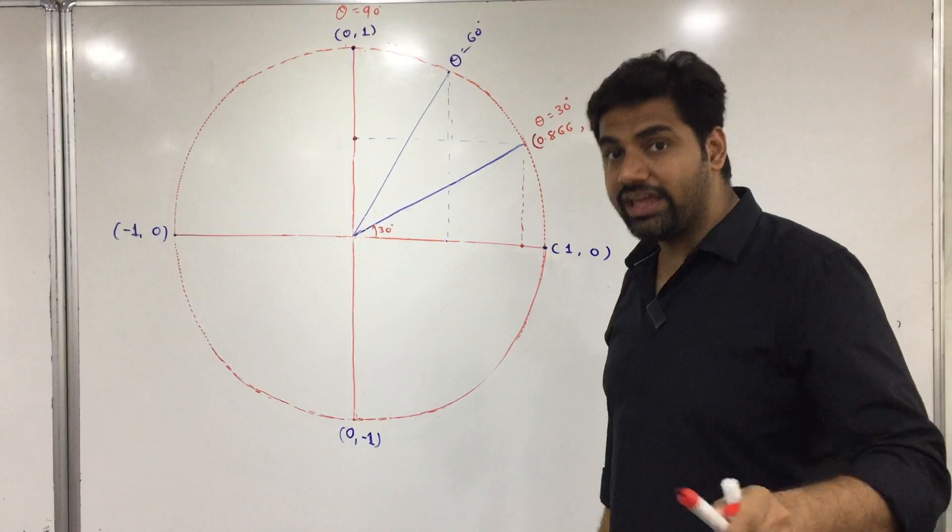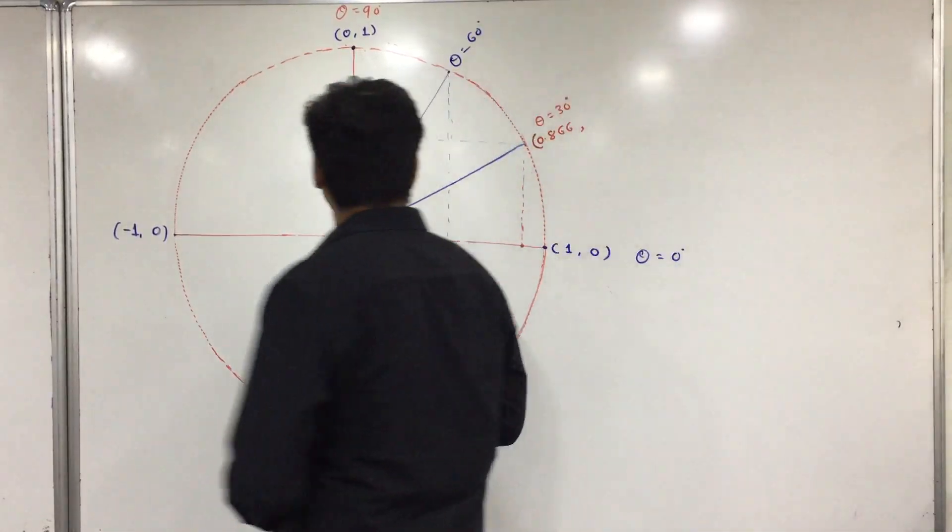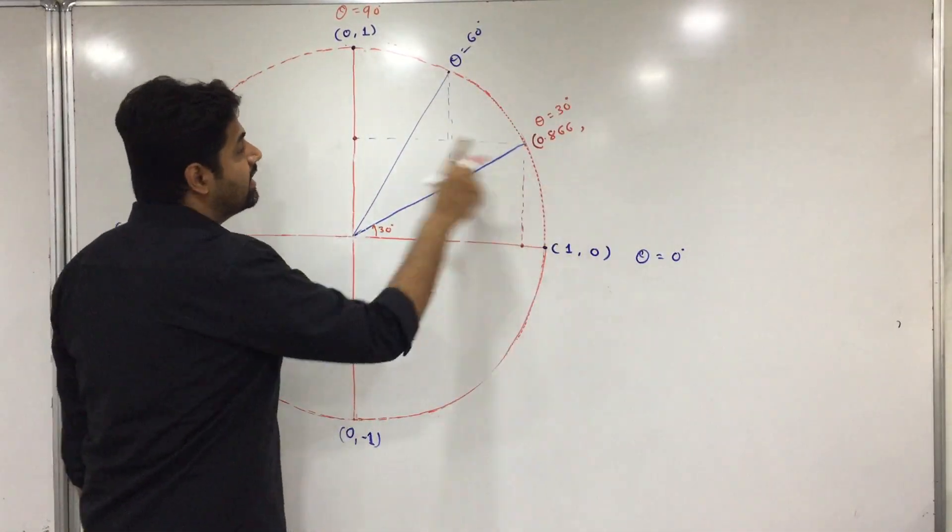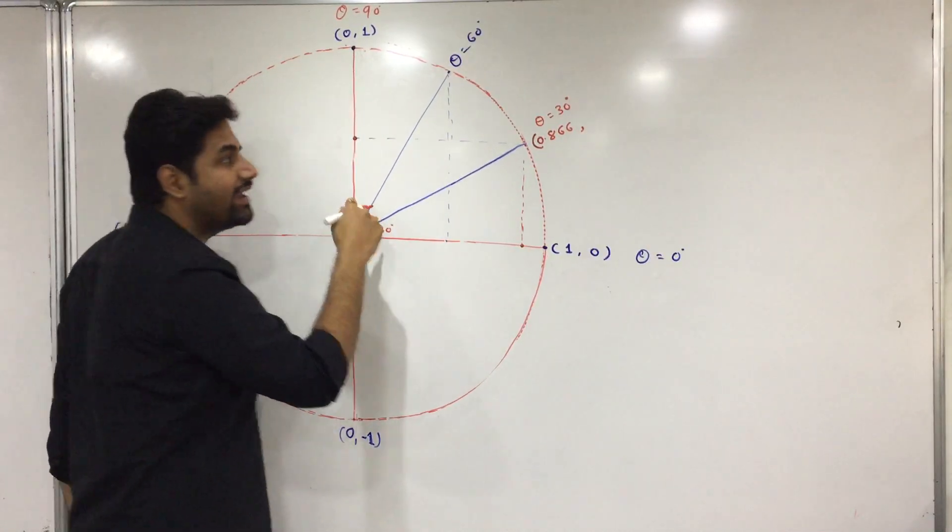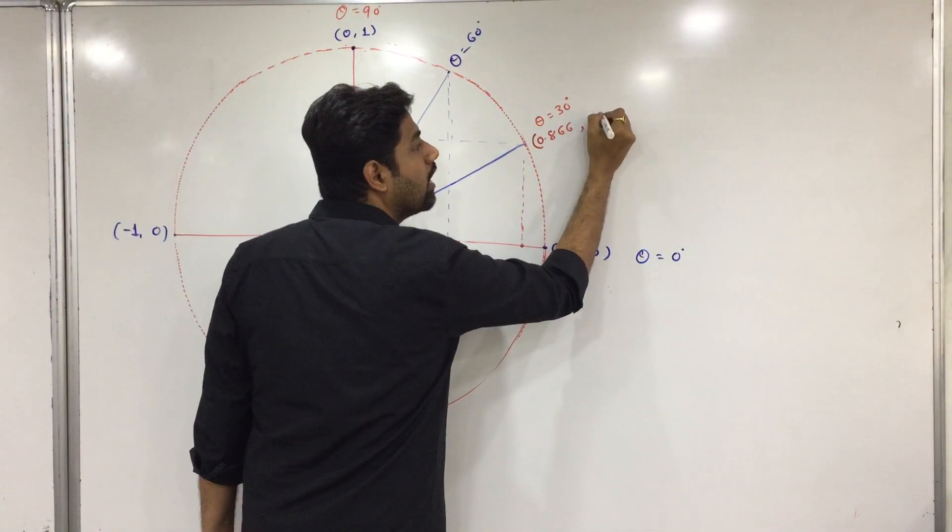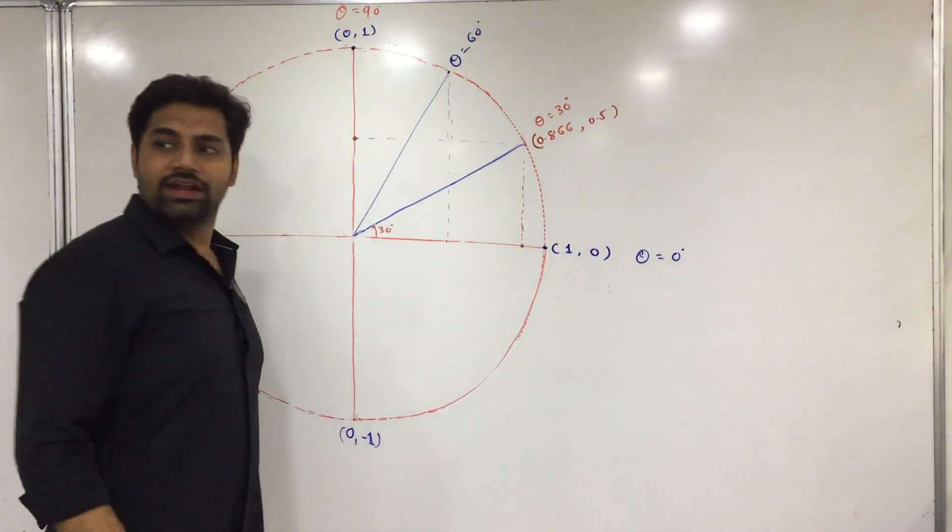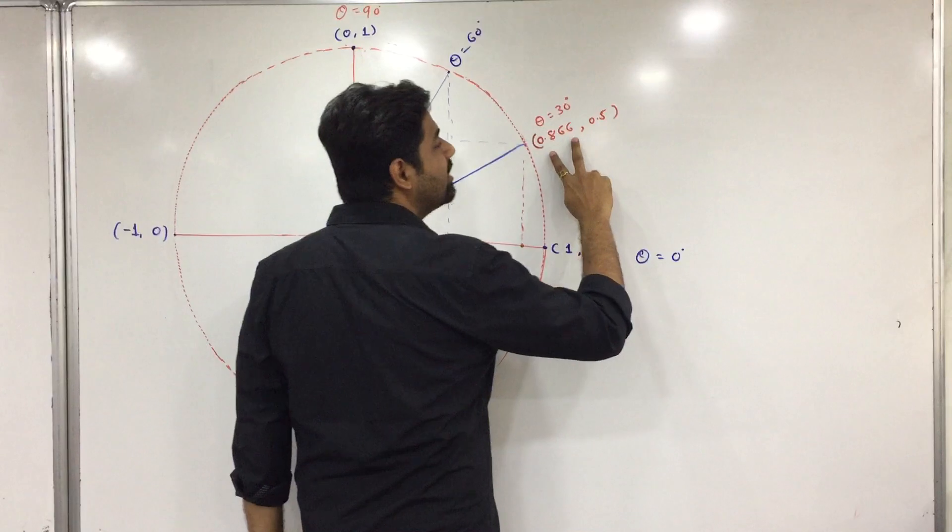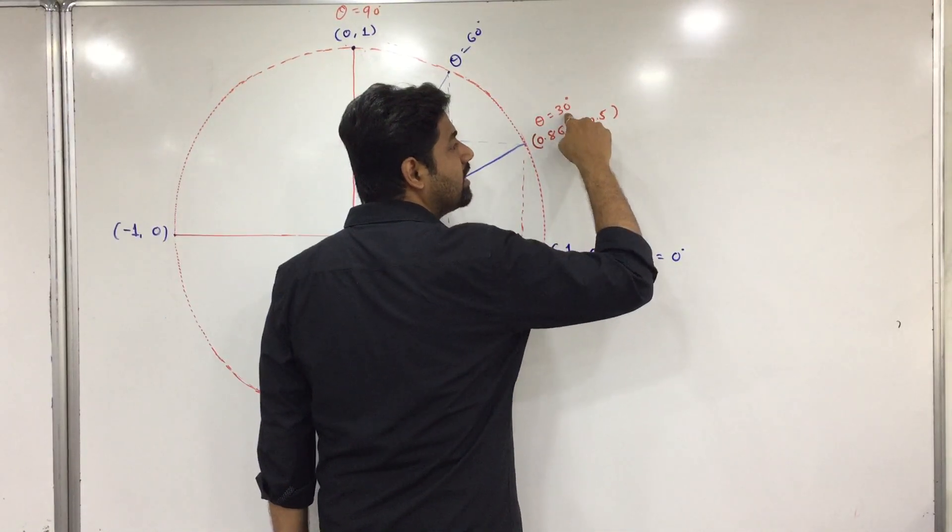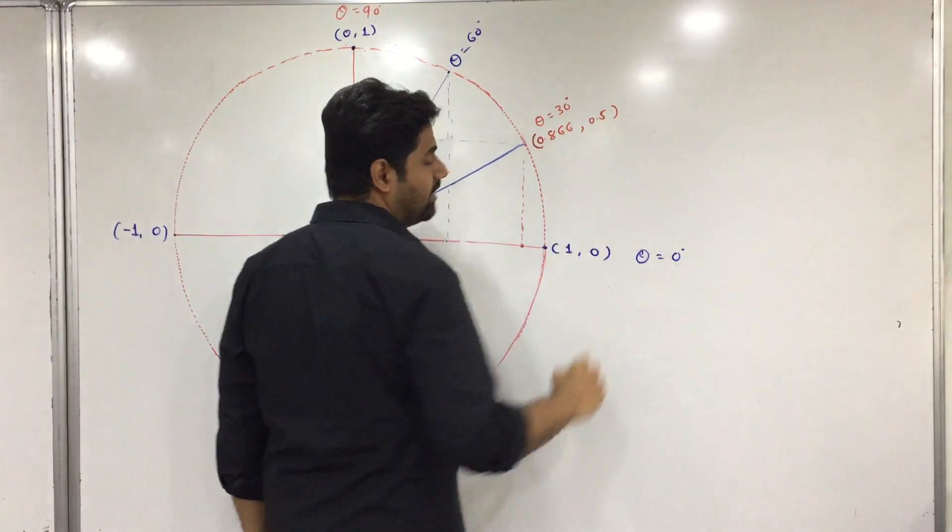And here it is exactly half. So this is 0.5. Aryabhatta uncle figured this out. This is how he figured it out.